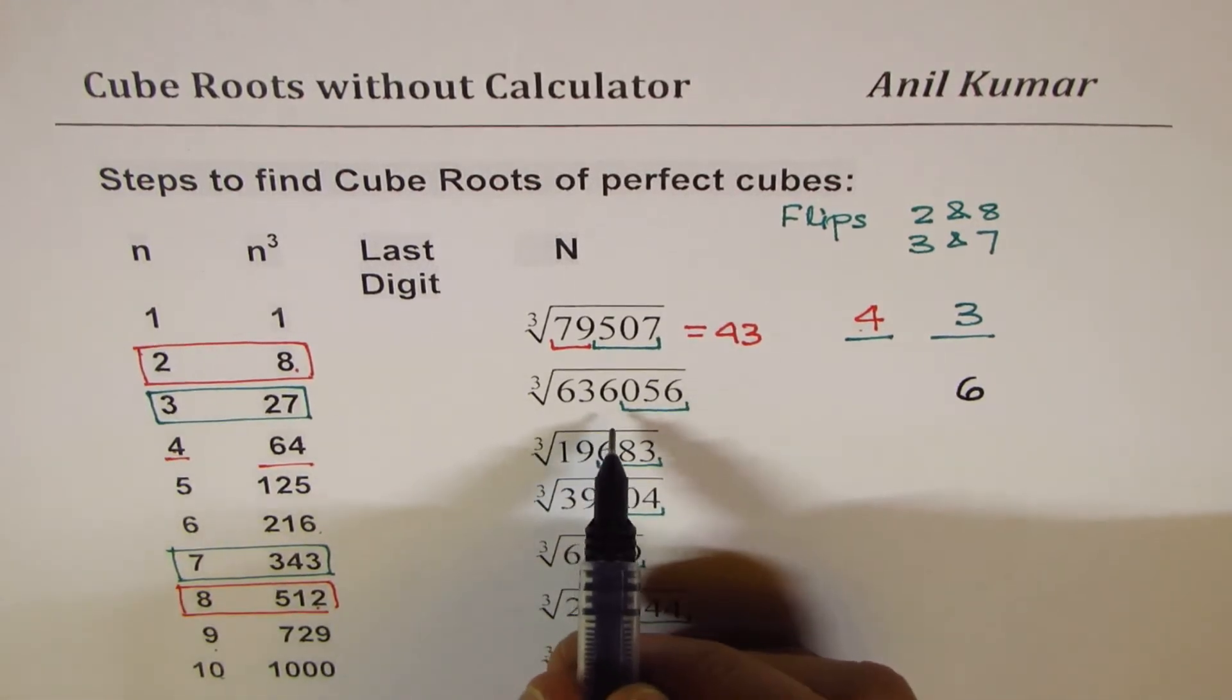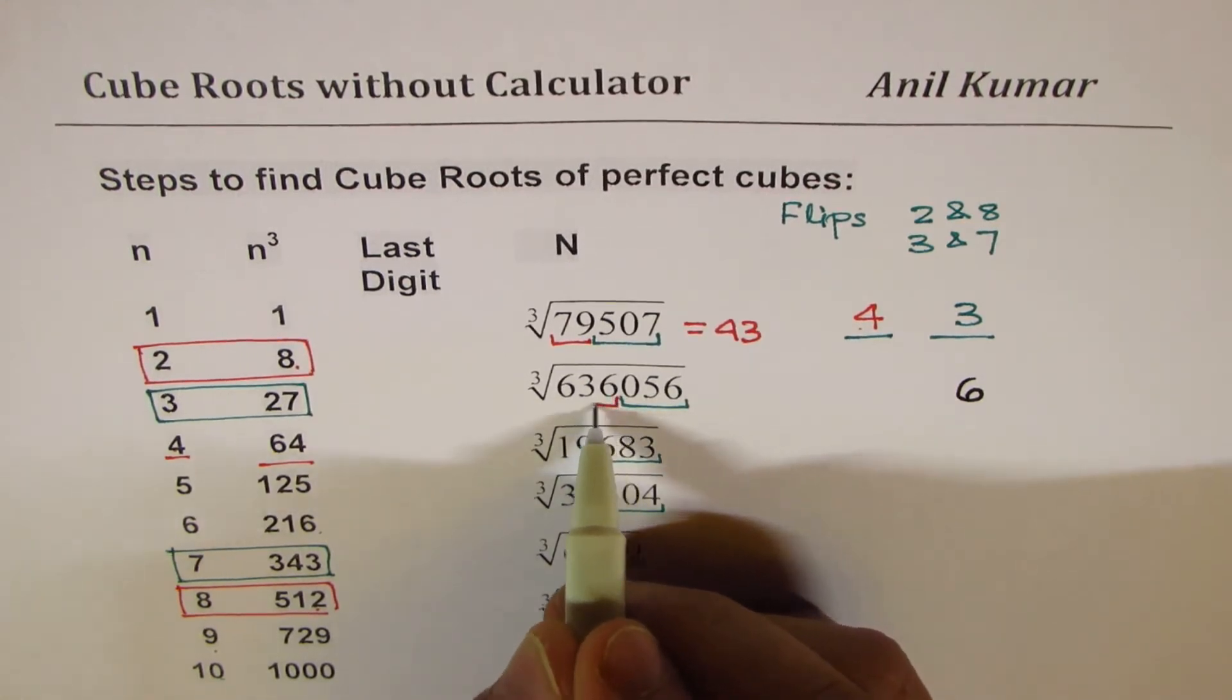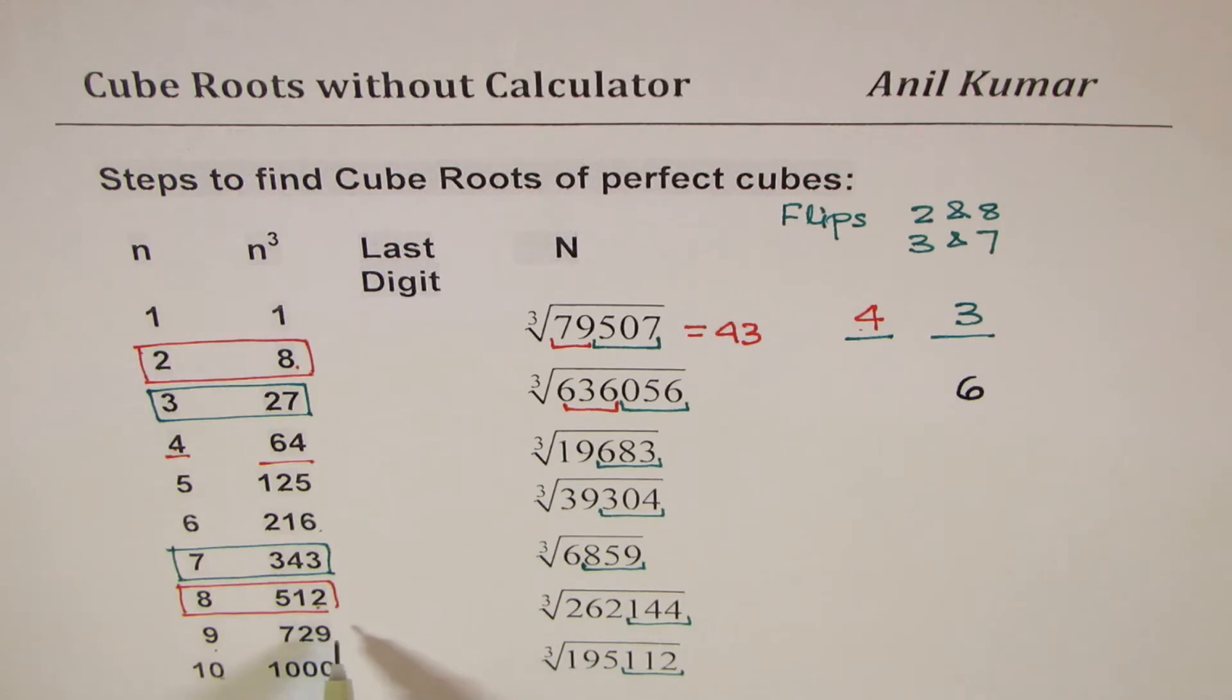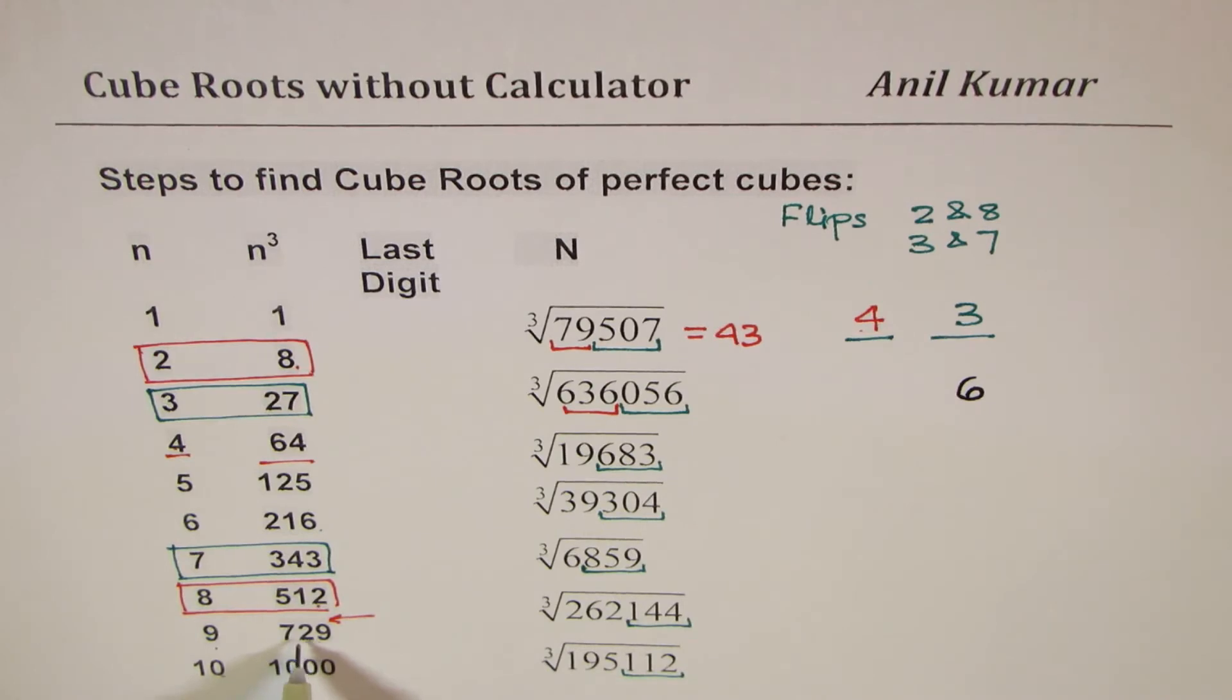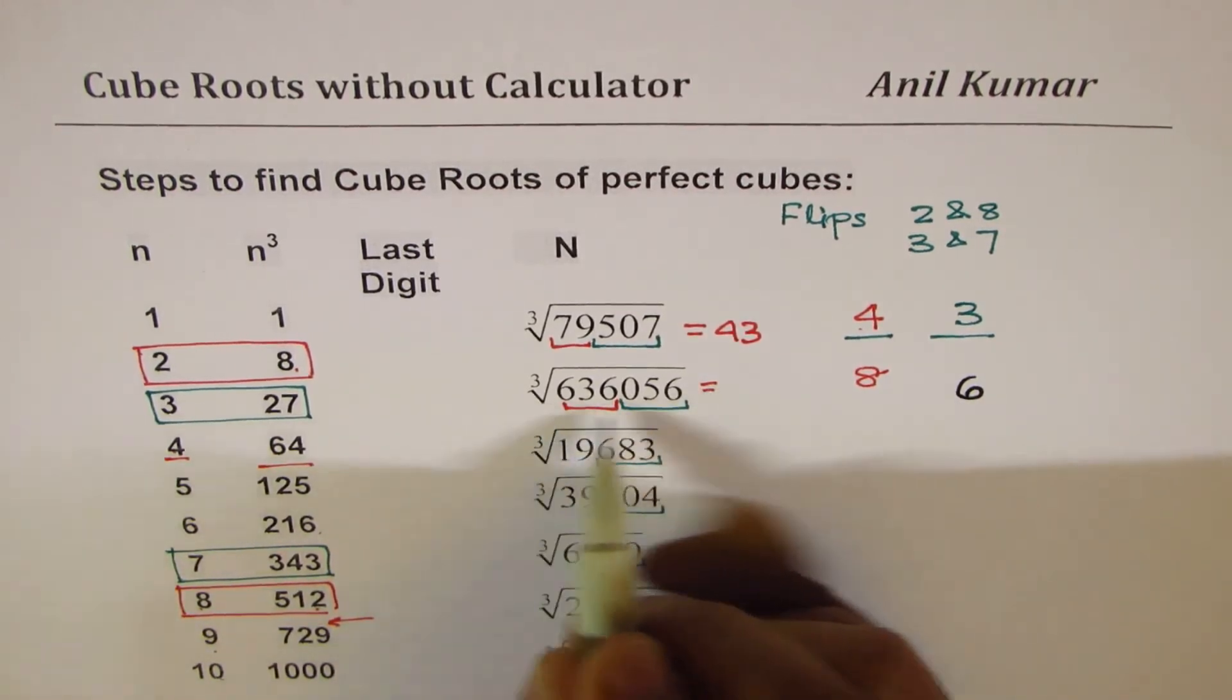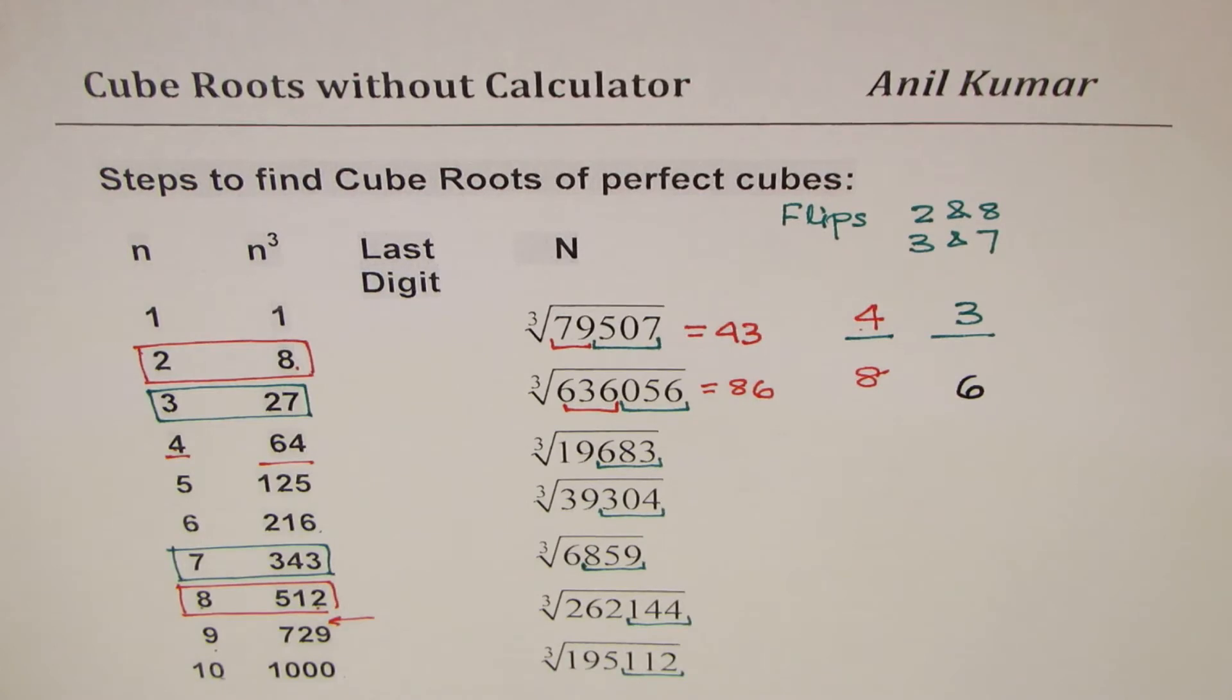The other group here is these three numbers: 636. Where is 636? If I go to 9 it goes over 636, so we have to limit ourselves to 8. So the answer is 86. So cube root of this number is 86.